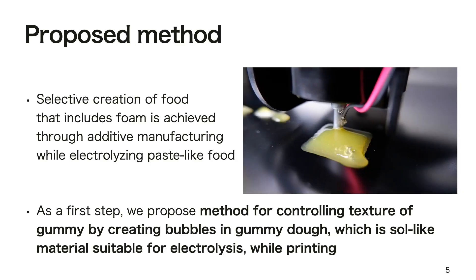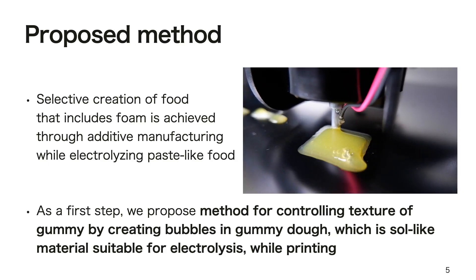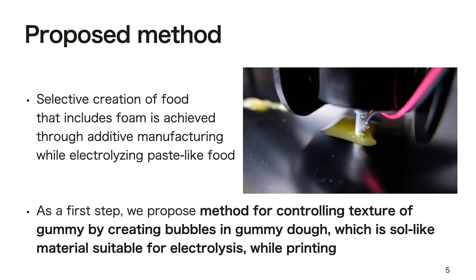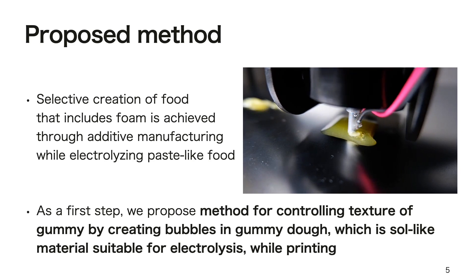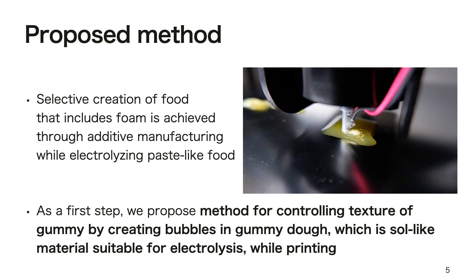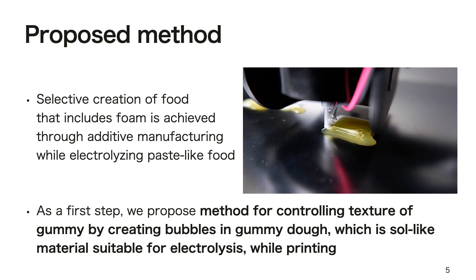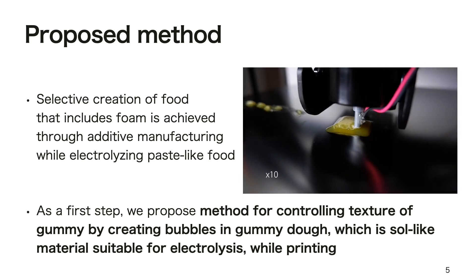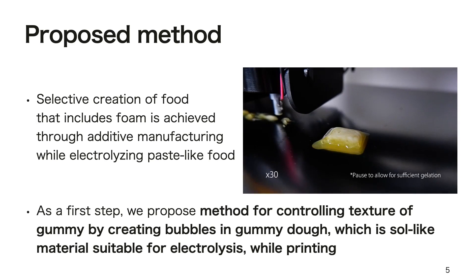Selective creation of food that includes foam is achieved through additive manufacturing while extruding paste-like food. Computer-controlled electrodes can generate bubbles at arbitrary moments during the extrusion process. As a first step, we propose a method for controlling the texture of gummy candy by creating bubbles in a gummy dough, which is a solid material suitable for extrusion, while printing.